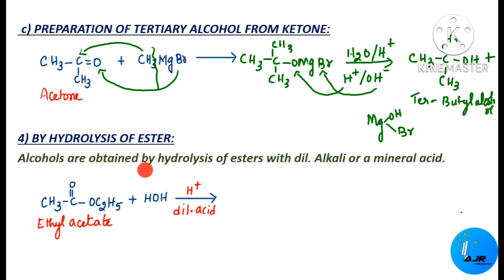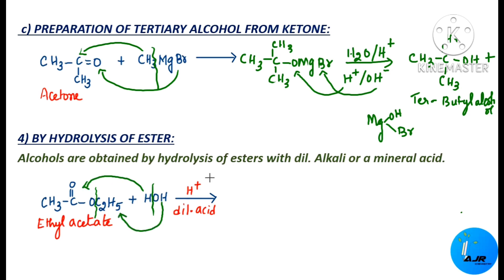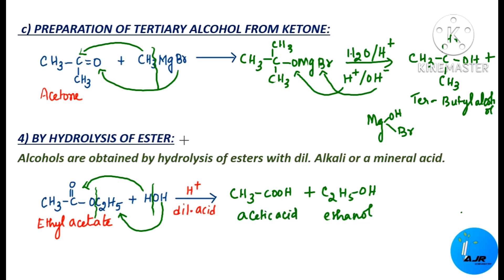Next is by hydrolysis of esters. Alcohols are obtained by hydrolysis of esters either in the presence of dilute alkali or mineral acids. Using dilute acid — water split into H+ and OH– — the H adds to one side and OH adds to the other, giving CH3COOH (acetic acid) plus C2H5OH (ethanol). By hydrolysis of an ester, it is possible to produce an acid and ethanol.